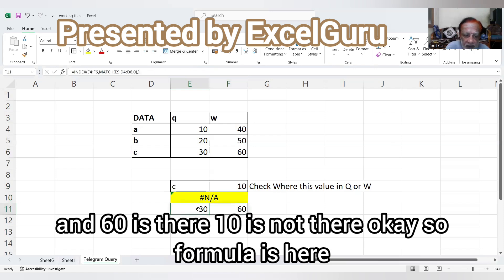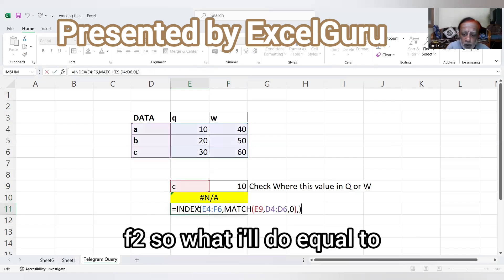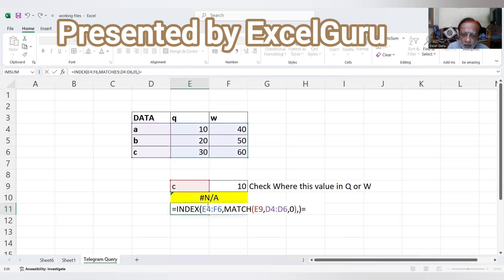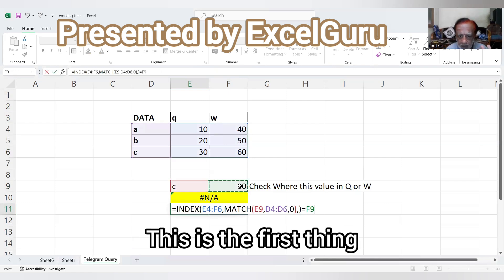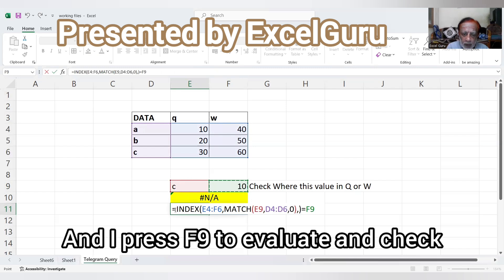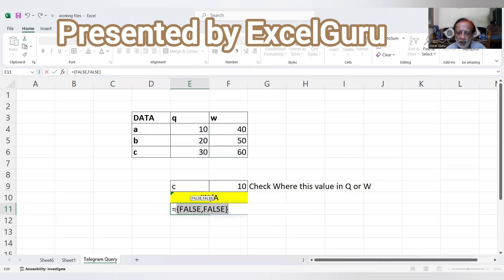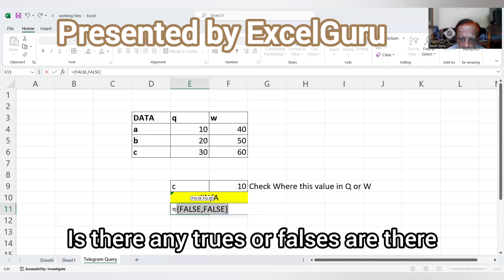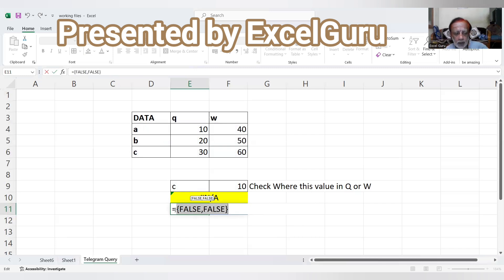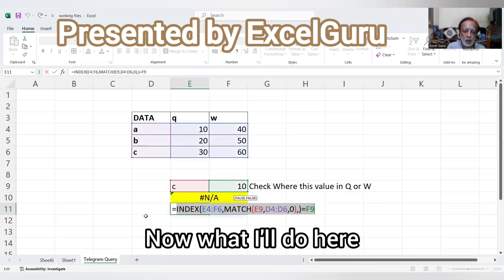Okay, so formula is here. What I'll do: equal to this. This is the first thing. And I press F9 to evaluate and check if there are any trues or falses.